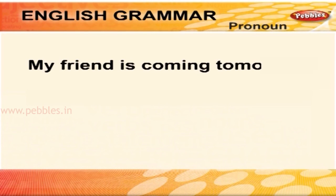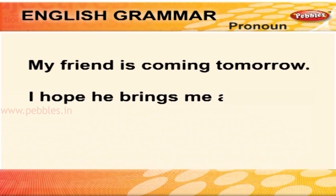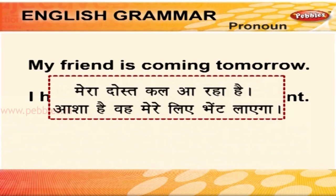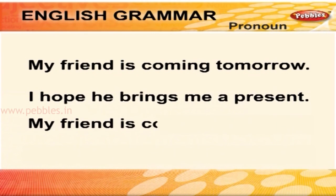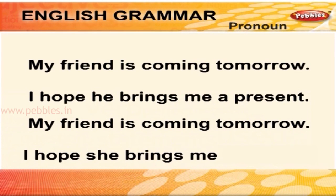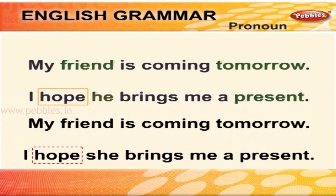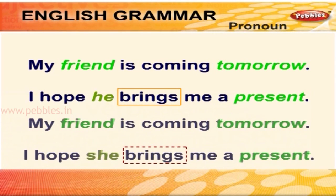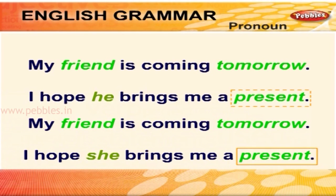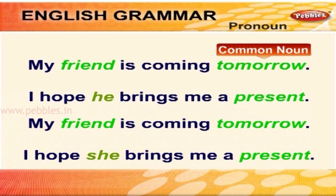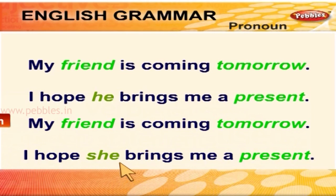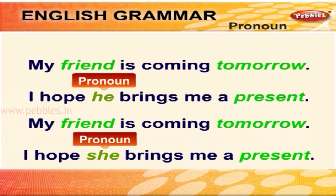My friend is coming tomorrow. I hope he brings me a present. मेरा दोस्त कल आ रहा है, आशा है वह मेरे लिए भेंट लाएगा। My friend is coming tomorrow. I hope she brings me a present. मेरा दोस्त कल आ रही है, आशा है वह मेरे लिए भेंट लाएगी। Hope का अर्थ है आशा, brings का अर्थ है लाना, present का अर्थ है भेंट। She एक pronoun है जो स्त्रीलिंग के लिए प्रयोग किया जाता है, he पुल्लिंग के लिए प्रयोग किया जाता है।